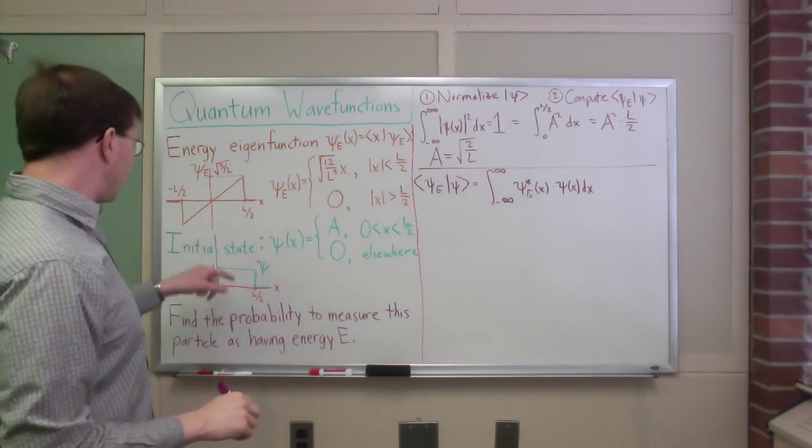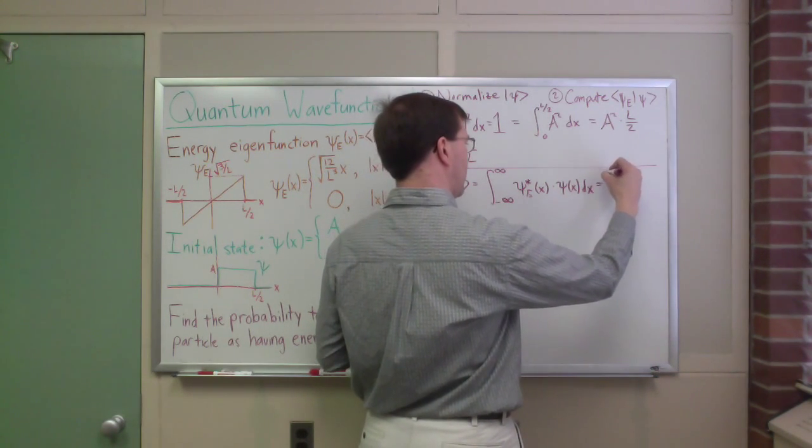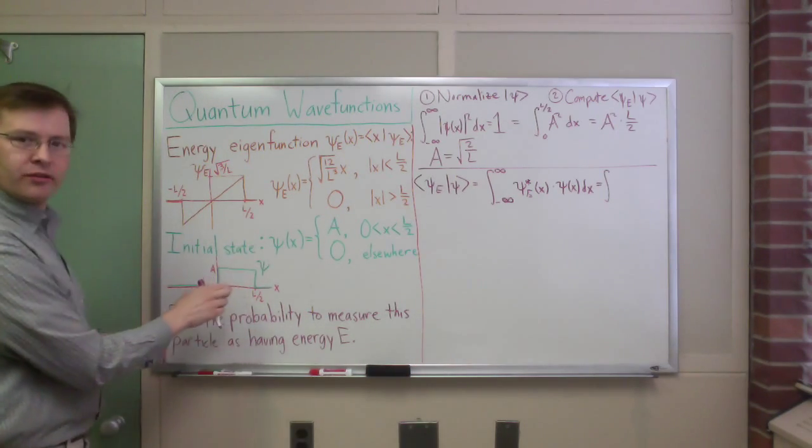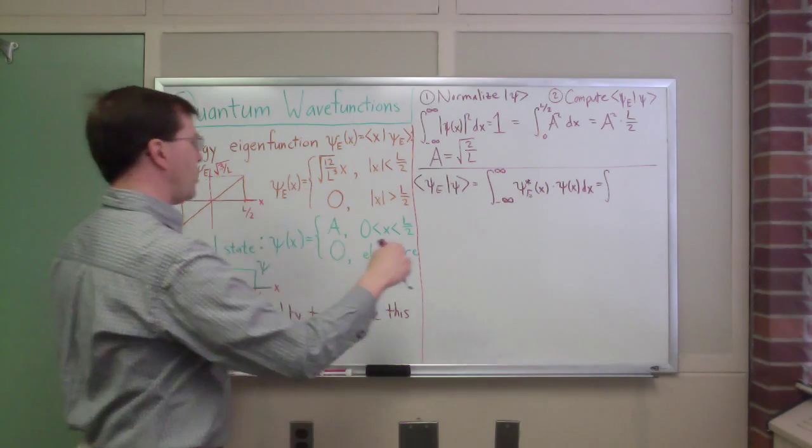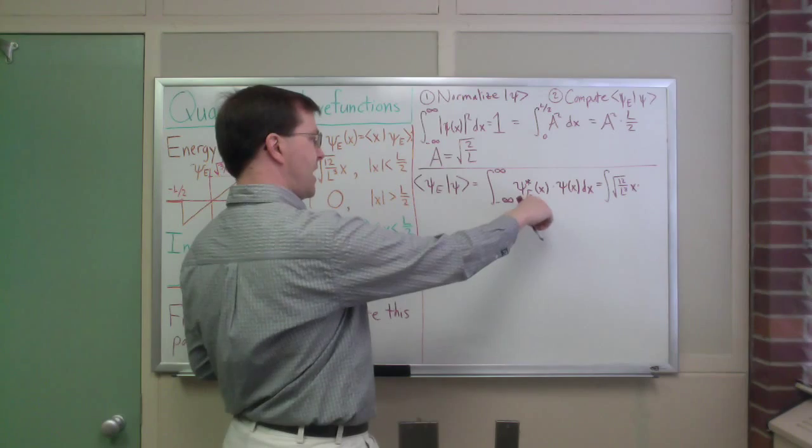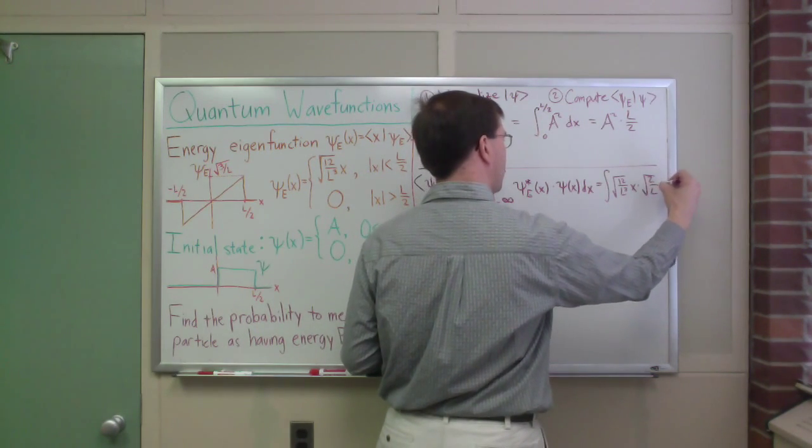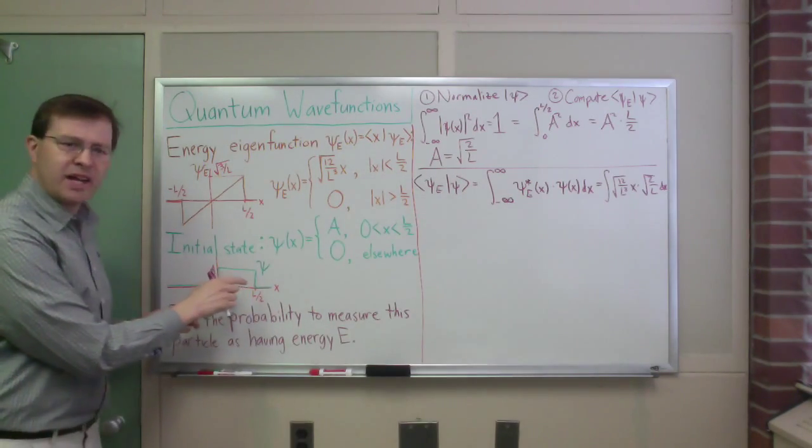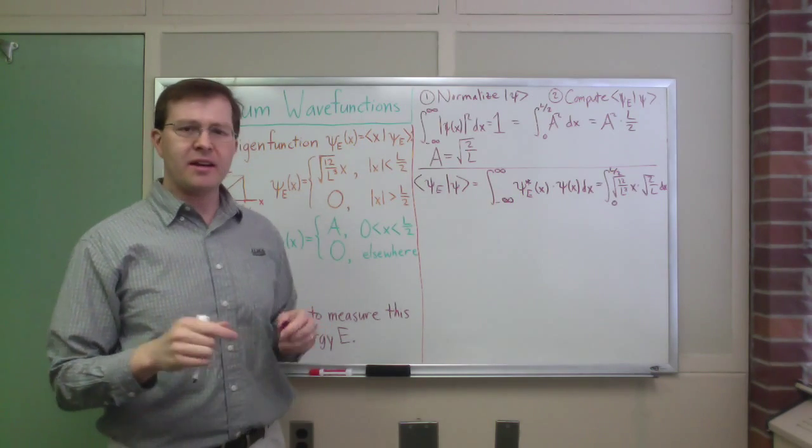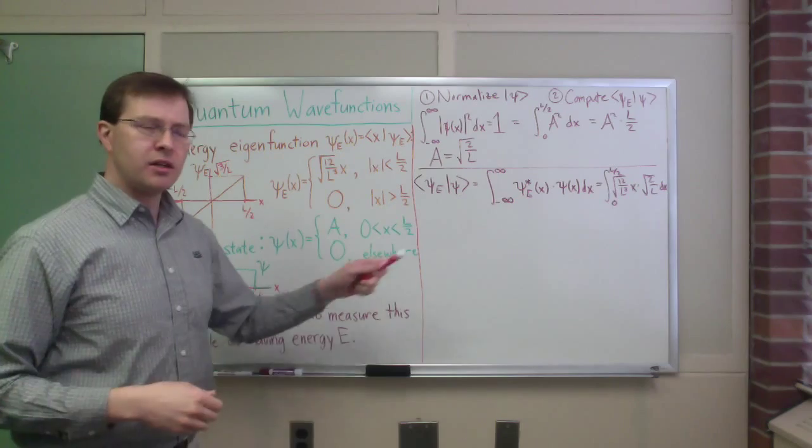So, oh boy, to do this integral, I'm going to have to multiply those two together. If I plug that in, that's equal to the integral, I know this is going to be an integral of, well, psi star, my psi is here, in the range that I care about, in here, 0 to L over 2, I'm going to be, what is it, square root of 12 over L cubed x times, that's my psi star, psi sub E star, and then my psi of x is just this constant, square root of 2 over L dx. And my limits of integration, again, I'm taking the product of these two, so that's going from 0 to L over 2. That's my, that's how I'd write this down.